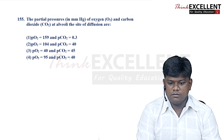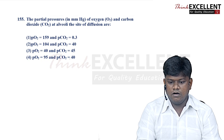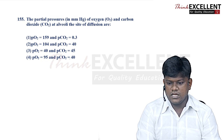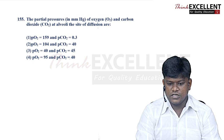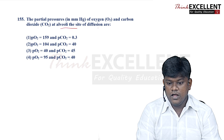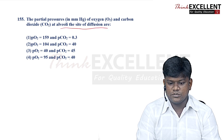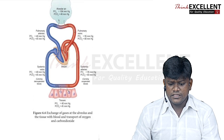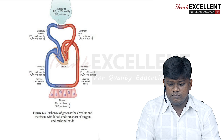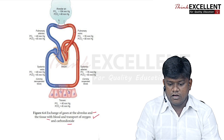Question 155: the partial pressure of oxygen and carbon dioxide at the alveolar site of diffusion — we confirm option 2 is the right answer. Exchange of gases at the alveoli and tissues with blood transport of oxygen and carbon dioxide is described clearly in the state board syllabus.